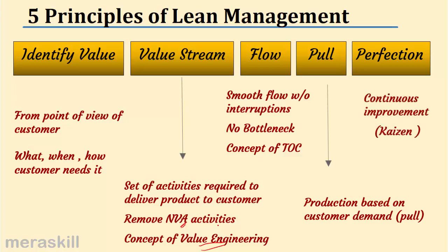Finally, there is the concept of Kaizen, which is continuous improvement. Perfection is the aim — continuously improve, do not stagnate; each time make one more thing better. So the five principles of lean management are: identify value, map the value stream of activities, ensure smooth flow, apply the pull concept where customer demand determines what is produced rather than pushing production onto the customer, and always pursue continuous improvement through Kaizen.